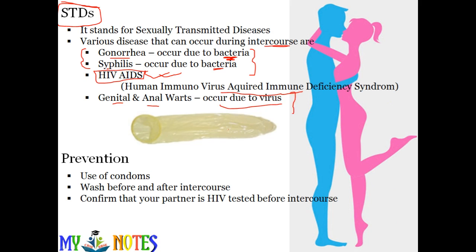How can we prevent STDs? Basically, use condoms. Wash before and after intercourse — clean your genital areas thoroughly. Confirm that your partner is HIV-tested before intercourse. You should have proper information and faith about your partner's health status before going physical.